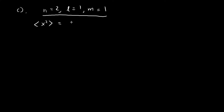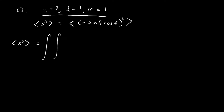In order to calculate this, we're going to have to break it down explicitly. Recall that x equals r times sine theta cosine phi. We square this and take the expected value. So to find the expected value of x squared, we need to deal with the integral involving r squared sine squared theta cosine squared phi. This is the expected value we're looking for.